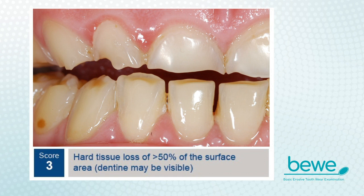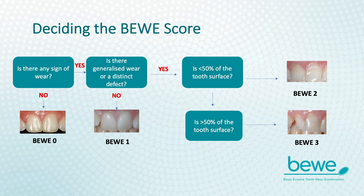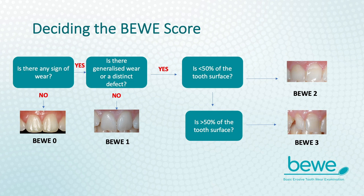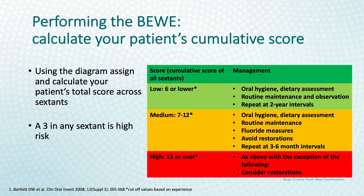There is a logical process flow. Firstly, consider if there are any signs of wear — if no, the score is 0. If there are signs of wear in the sextant, choose the tooth with the most wear and evaluate the extent of the defect. If it is minimal and the change is subtle, the score is 1. For surfaces with more extensive defects, consider if it is less or more than 50% of the tooth surface: if less, the lesion is scored 2; if more, it is scored 3. Once you have assigned a score to each sextant, this is totalled and can guide management. Most importantly, if a patient scores 3 in any sextant, they should be considered high risk, and restorative intervention may be indicated. For all other scores, prevention is the primary focus.